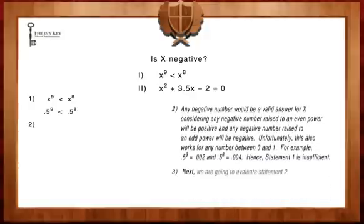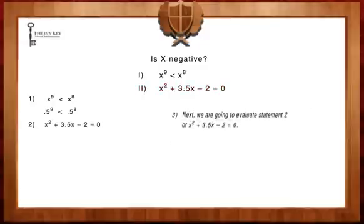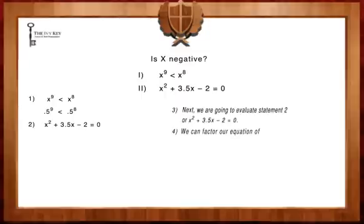Next, we're going to evaluate statement 2, or x^2 + 3.5x - 2 = 0. We can factor our equation of x^2 + 3.5x - 2 to (x - 0.5)(x + 4).